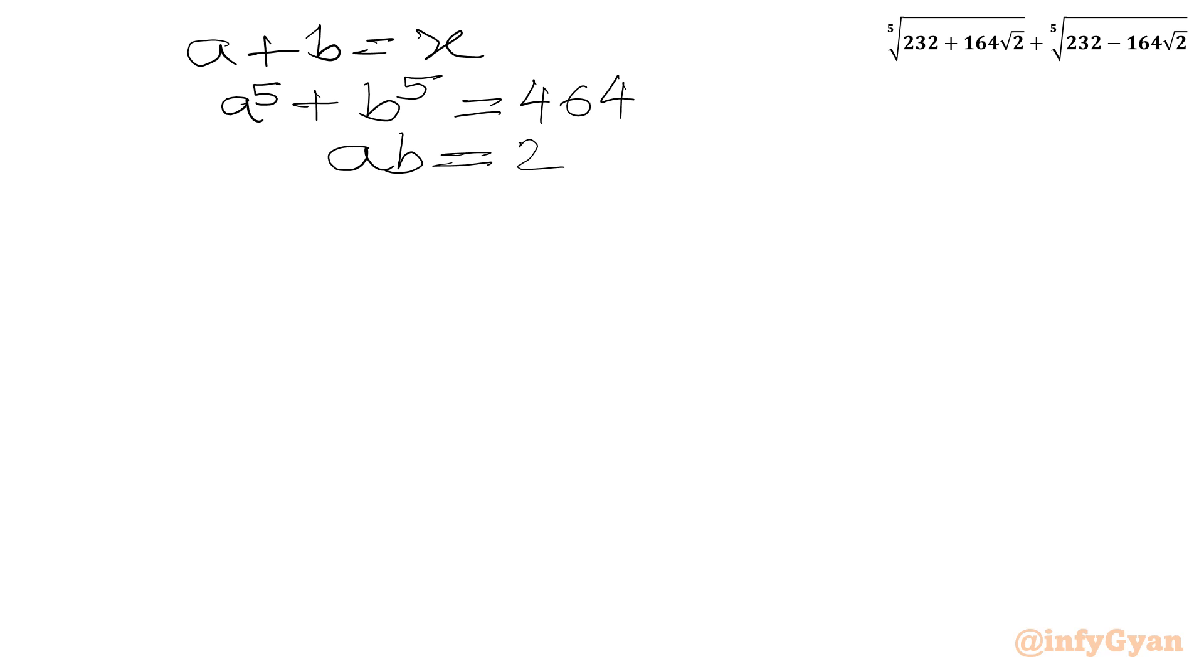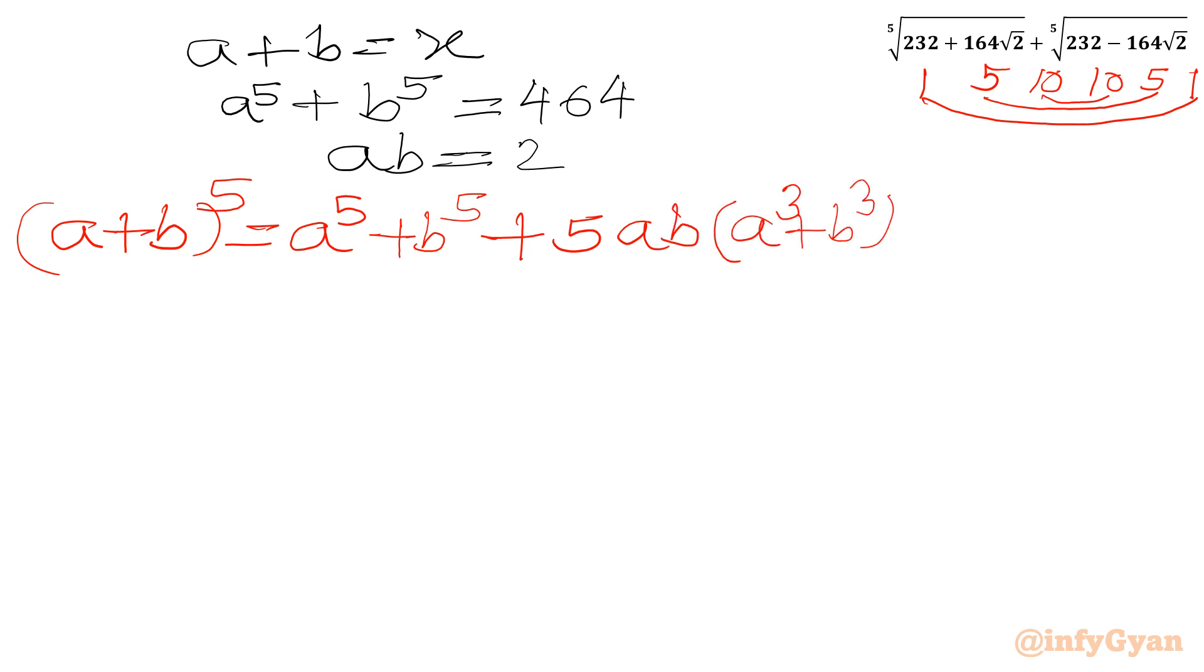Now I will use binomial theorem or binomial expansion. So let us write A plus B whole power 5. We know the expansion coefficients using Pascal triangle: 1, 5, 10, 10, 5, 1. So I can club coefficient 1 all together, coefficient 5 all together, coefficient 10 all together. So A power 5 plus B power 5, then 5 times AB in the bracket A cube plus B cube. For coefficient 10 we will be writing 10 times A square B square times A plus B.